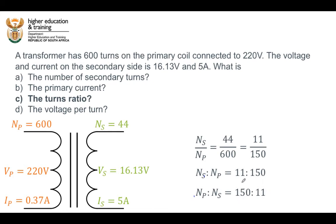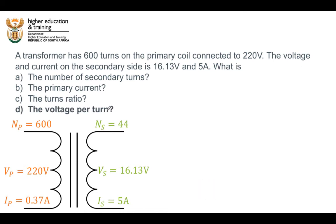It doesn't really matter which way around you write the ratio, so long as you tell whoever is reading your work which way around you are writing — is it secondary to primary or is it primary to secondary?